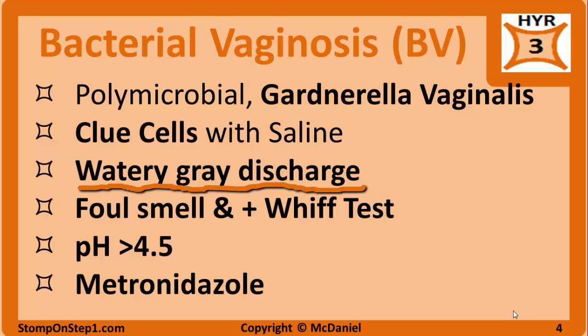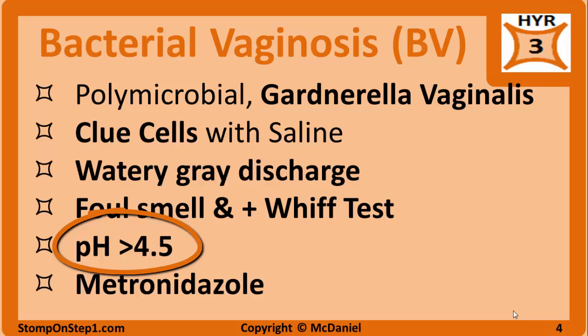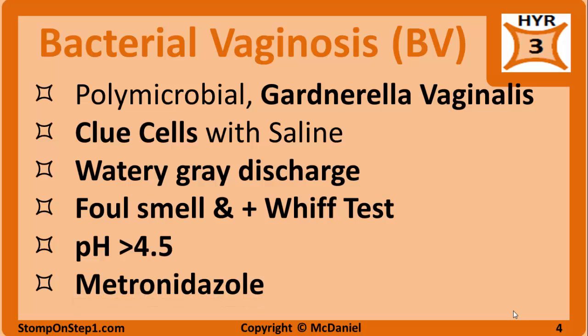A thin, watery grey discharge is present in BV. A foul smell is present, often described as an amine odor or fishy smell. This smell is intensified after unprotected intercourse or when KOH is added, a positive whiff test. There is an alkaline pH greater than 4.5 in reproductive age women. There is minimal itching and minimal inflammation or erythema, with few leukocytes visible on microscopy. Treatment includes topical metronidazole or oral metronidazole if that doesn't work. Clindamycin is another option.